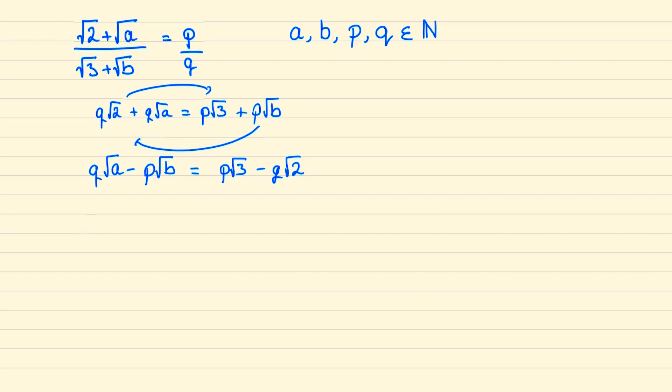And next we can square both sides so that the left side becomes aq squared plus bp squared minus 2pq root ab. And the square of the right side will be 3p squared plus 2q squared minus 2pq root 6.